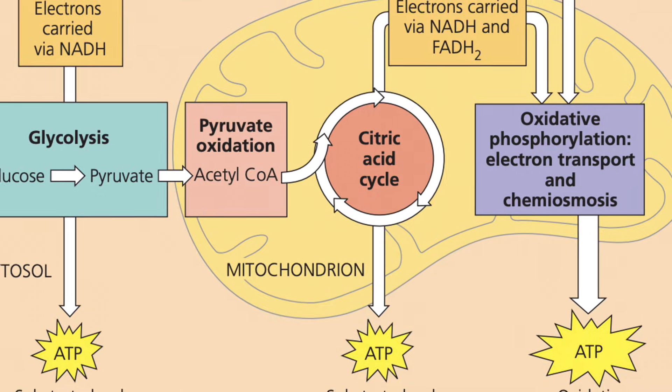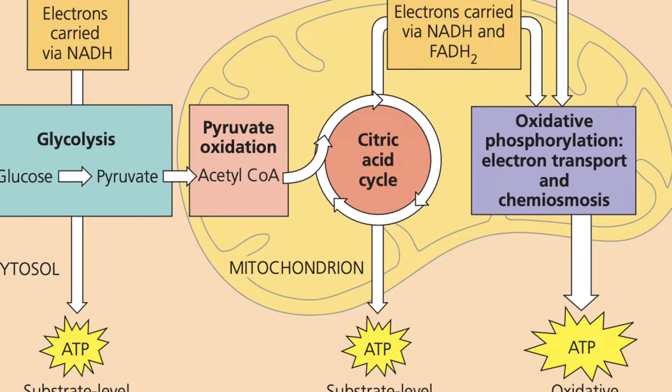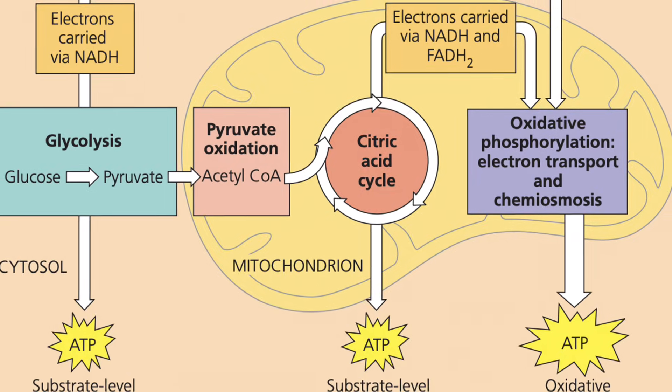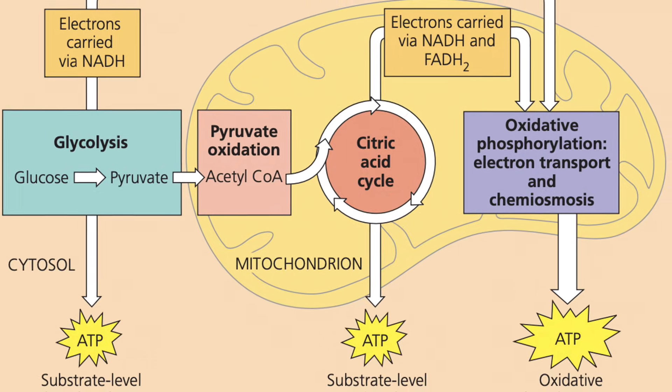Lastly, if glycolysis evolved that long ago and is universal in both prokaryotic and eukaryotic cells, then it should occur in the cytoplasm. That's because prokaryotes don't have organelles. So if it's a common process, then it has to occur in a common area — which the cytoplasm is.